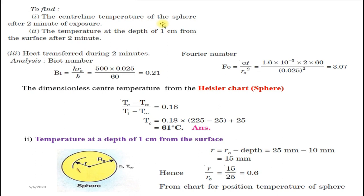For the sphere, go to the first graph giving center line temperature. The last problem used the infinite plate; now it is a sphere. The first graph gives center line temperature, the second gives temperature at a position, and the third gives heat transfer rate (Gröber chart). For Biot number 0.21 and Fourier number 3.07, referring to the first graph of sphere.